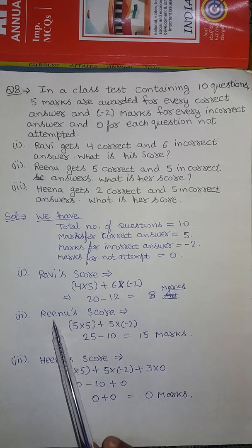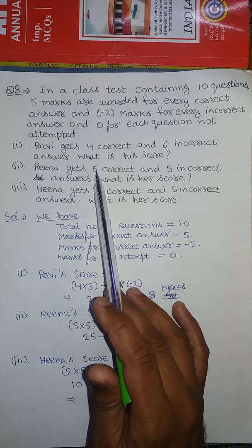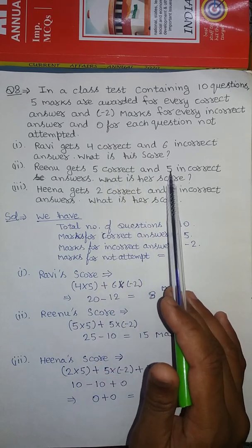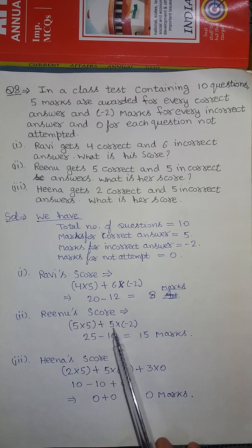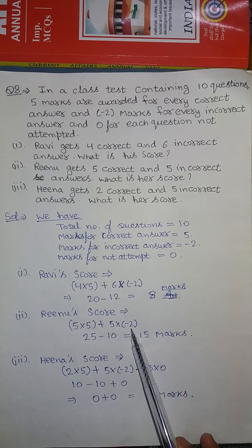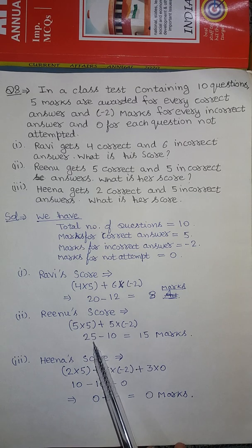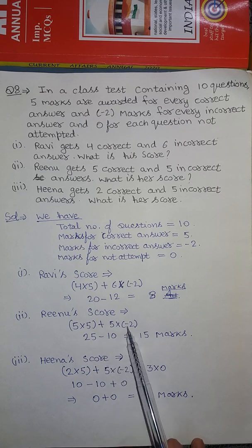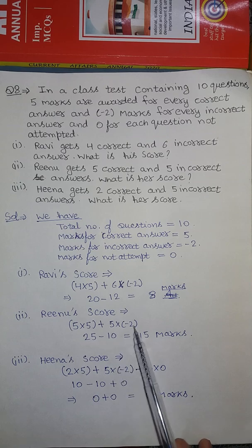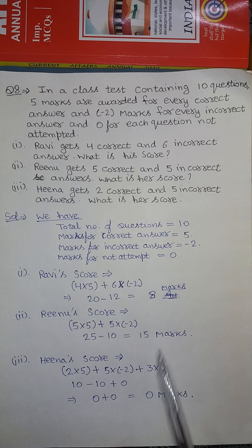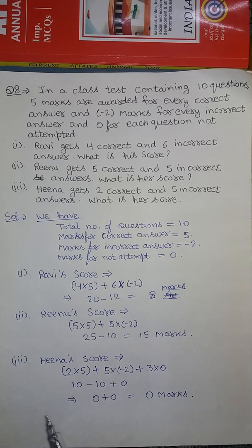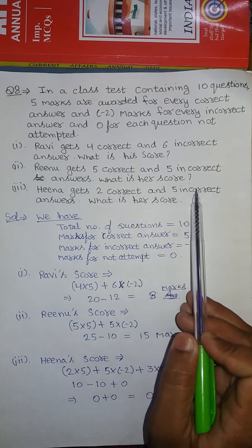Next, Rinu's score: she gave 5 correct and 5 incorrect answers. For 5 correct answers, that is 5 into 5, and for 5 incorrect answers, that is 5 into minus 2. So 5 into 5 is 25, and 5 into 2 is 10, giving 25 minus 10 equals 15. Rinu will get 15 marks.